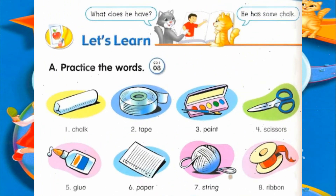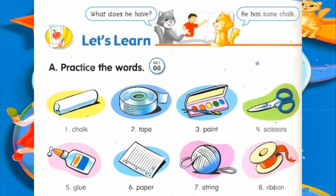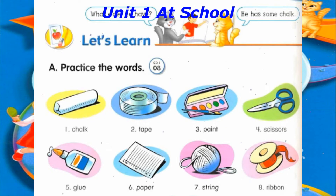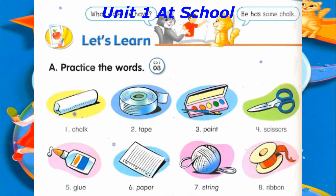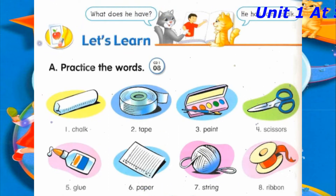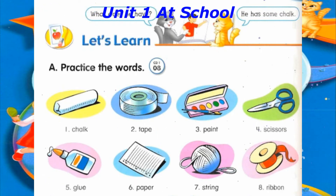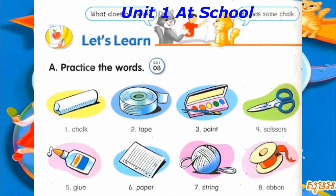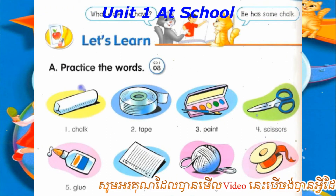Track 8. Let's learn. A. Practice the words. Number 1: Chalk. Number 2: Tape. Number 3: Paint. Number 4: Scissors. Number 5: Glue. Number 6: Paper. Number 7: String. Number 8: Ribbon.